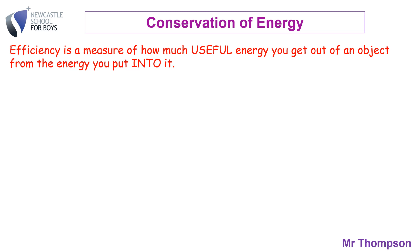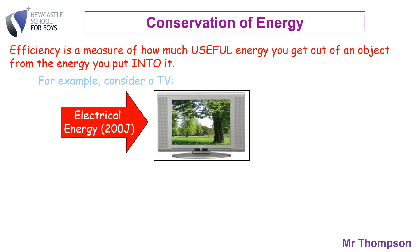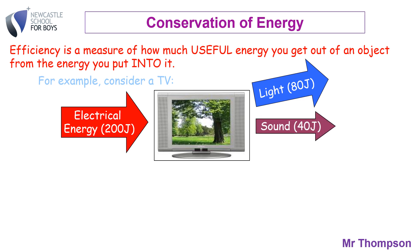A bit more tricky now. There is a calculation needed if you're going to work out the efficiency of something. Ideally everything would be 100% efficient, meaning 100% of what you put in would come out as useful energy. But you do transfer energy into unuseful things. For example, a TV: if you put 200 joules of energy — joules is a measure of energy — into a TV, you must get 200 joules out. So if you get 80 joules of light out, that's brilliant because that's what you want. And you get 40 joules of sound — that's fantastic. But the missing energy would be heat energy, which would add up to 80 joules, and that would be wasted.